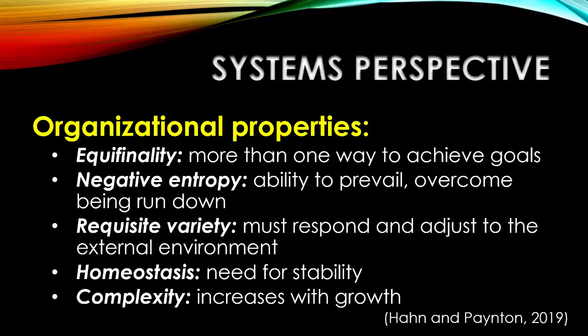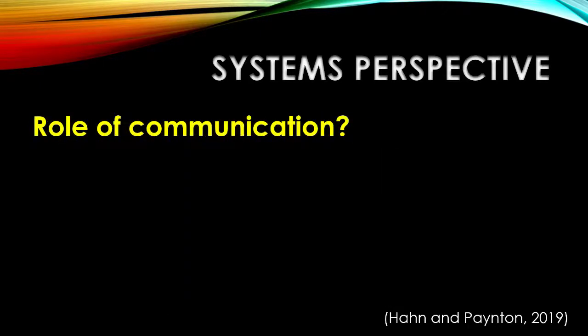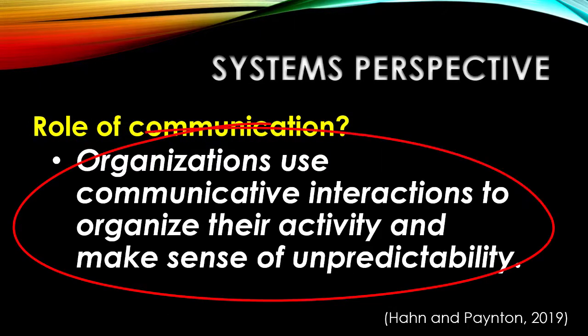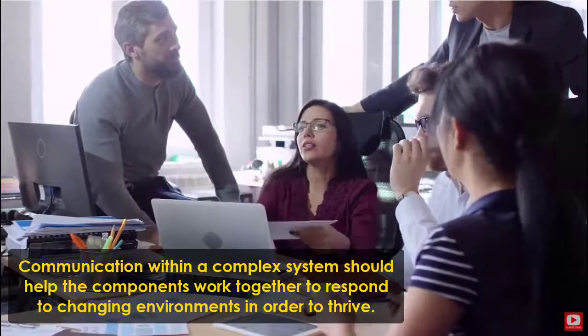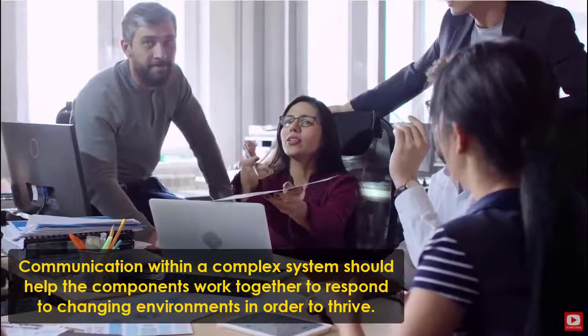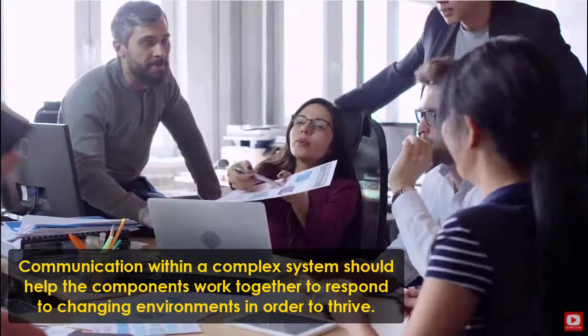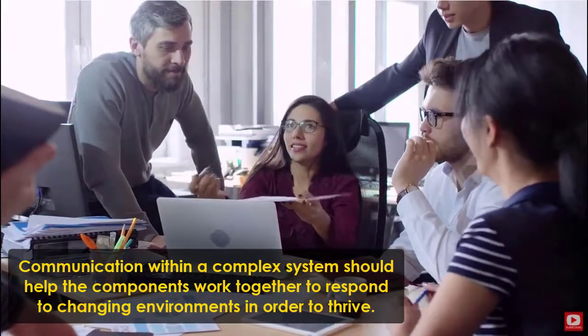From a systems perspective, the role of communication is essentially to use the interactions that take place to organize activity and make sense of the unpredictability. If we live in an environment defined by change and flux, what we need to do is figure out how to reach that sense of homeostasis and negative entropy — to continue to grow and thrive amidst the unpredictability. We use our communicative interactions to figure out ways to negotiate, adjust, and adapt to our environment in order to make the organization do the things it needs to do.